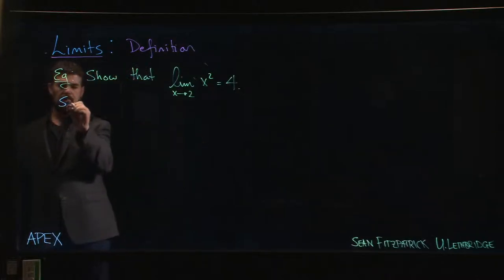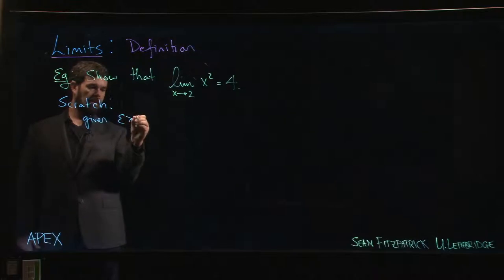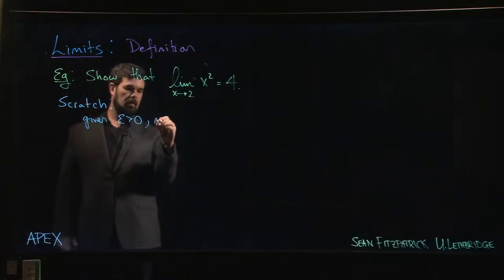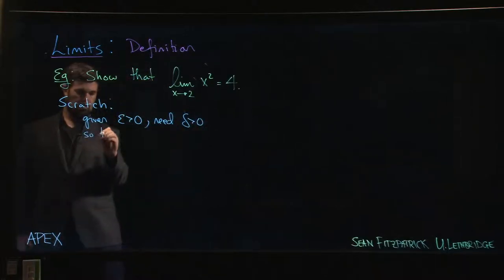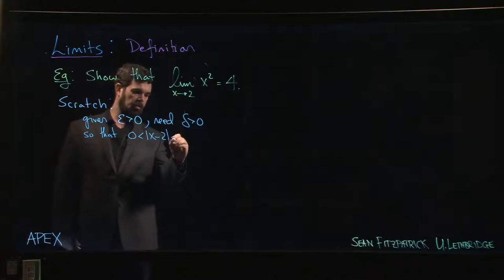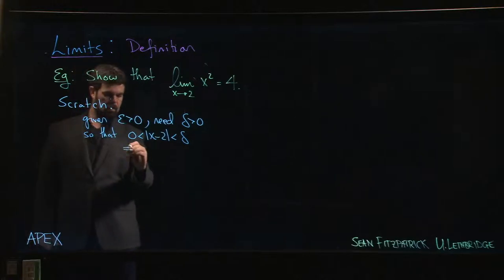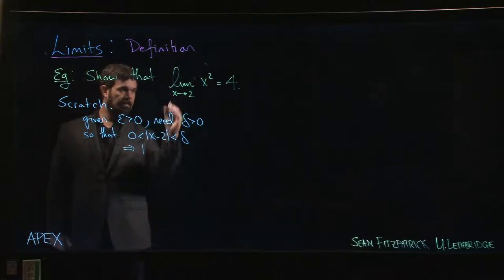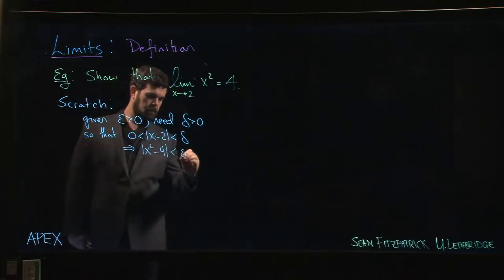So you come over here and say, what's our scratch work? Well, remember that the setup here is somebody's going to give us epsilon. And given that epsilon, we need to find this delta so that if |x - 2| is less than delta, then it's going to follow that f(x), which is x² - 4, is less than epsilon.